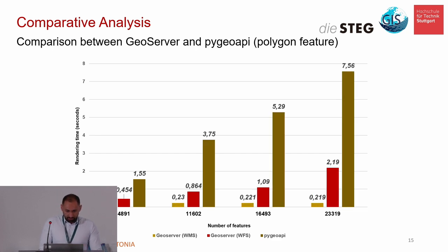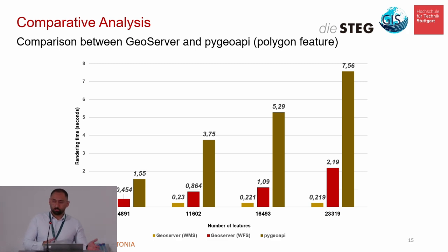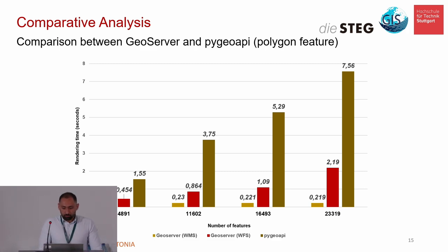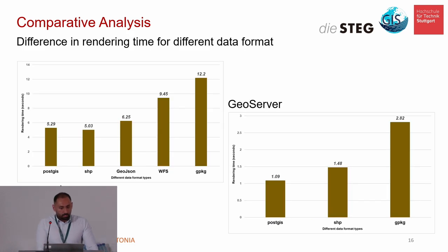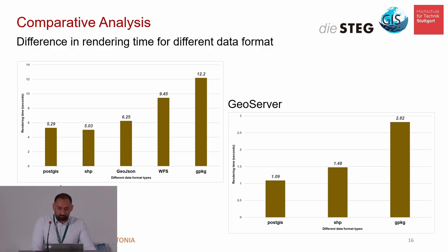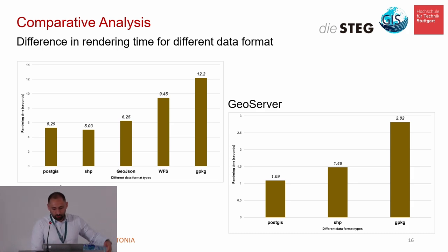This is a very important chart: the comparison between GeoServer and PyGeoAPI. Because we have different feature types — polygon, point, and line — in this showcase we are using polygon features. You can see the difference between PyGeoAPI and GeoServer. Another important aspect is rendering time for different data formats. PostGIS is the best format for both, while GeoPackage is the worst in this case.